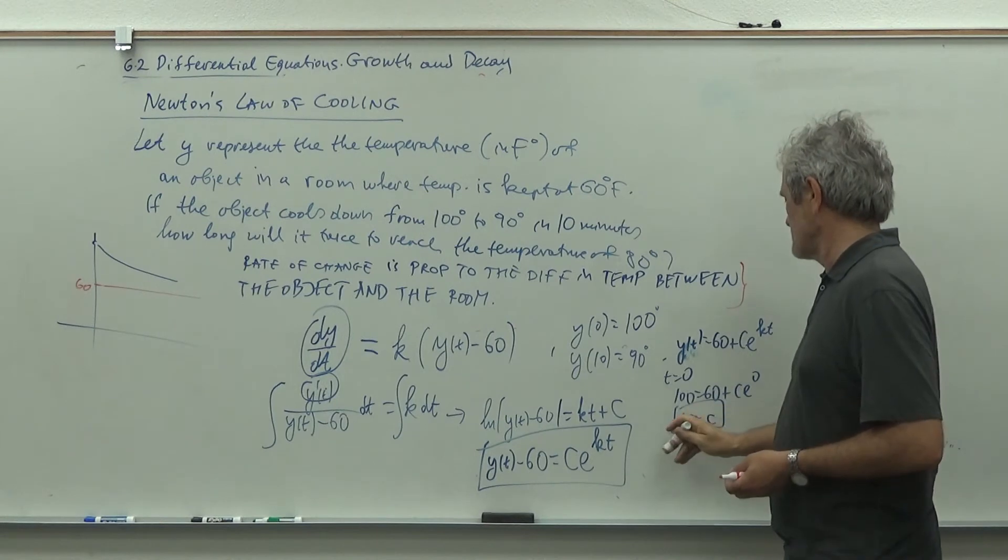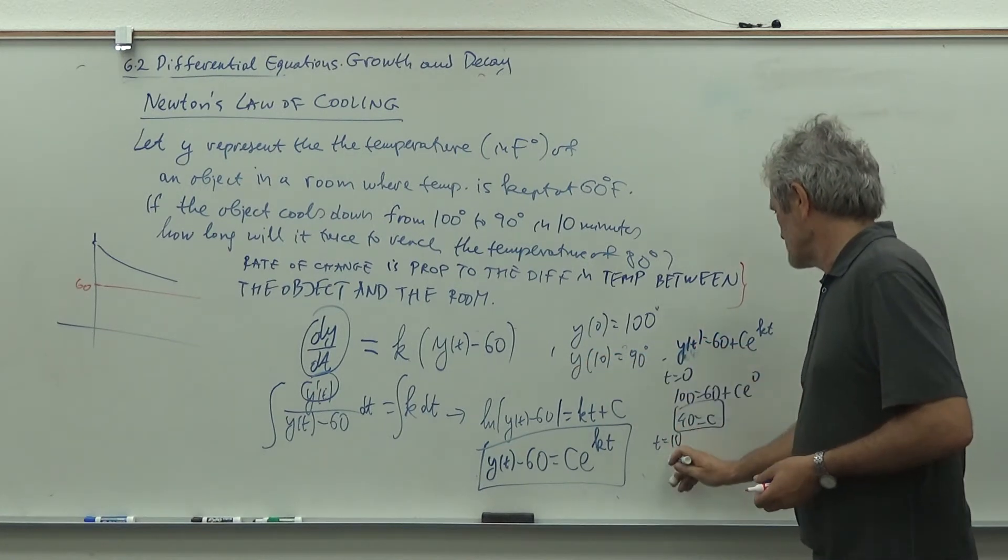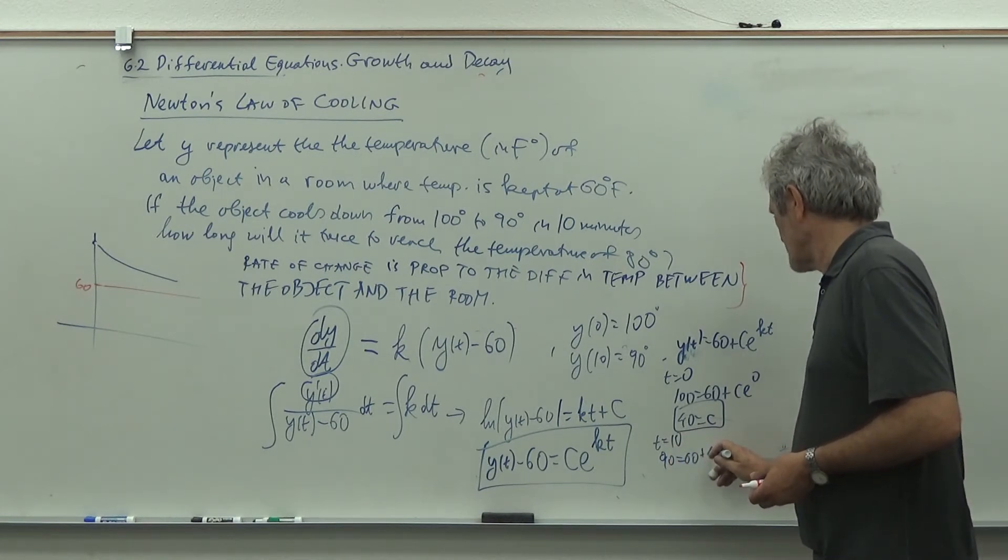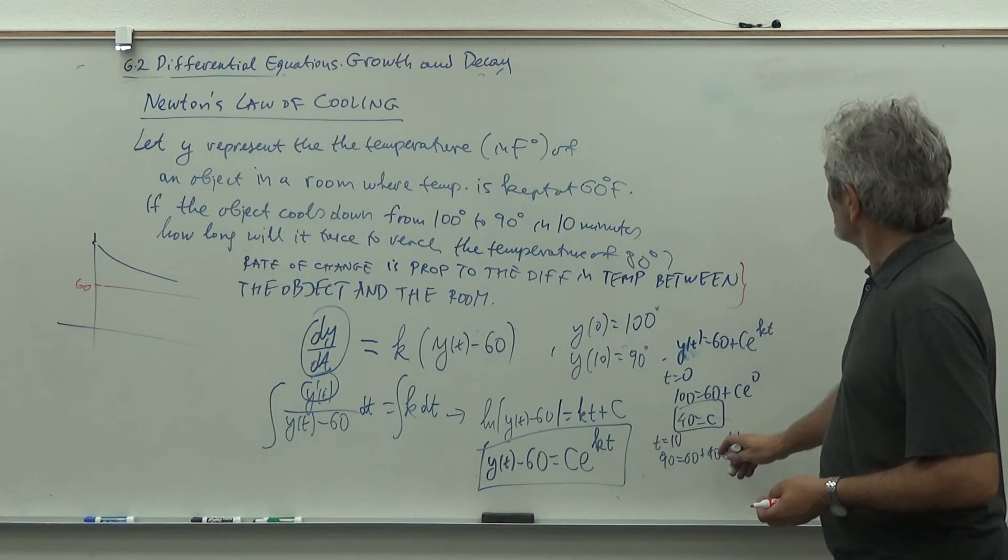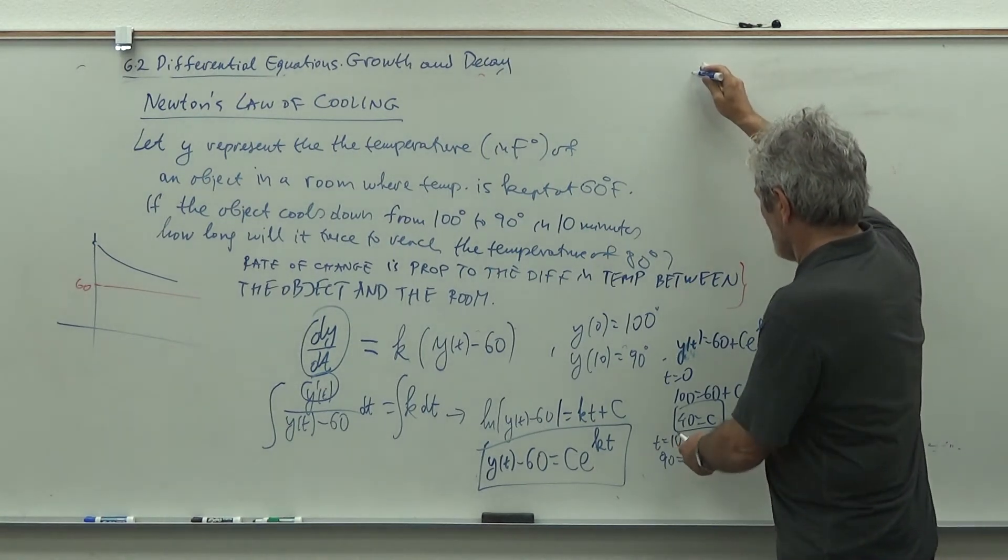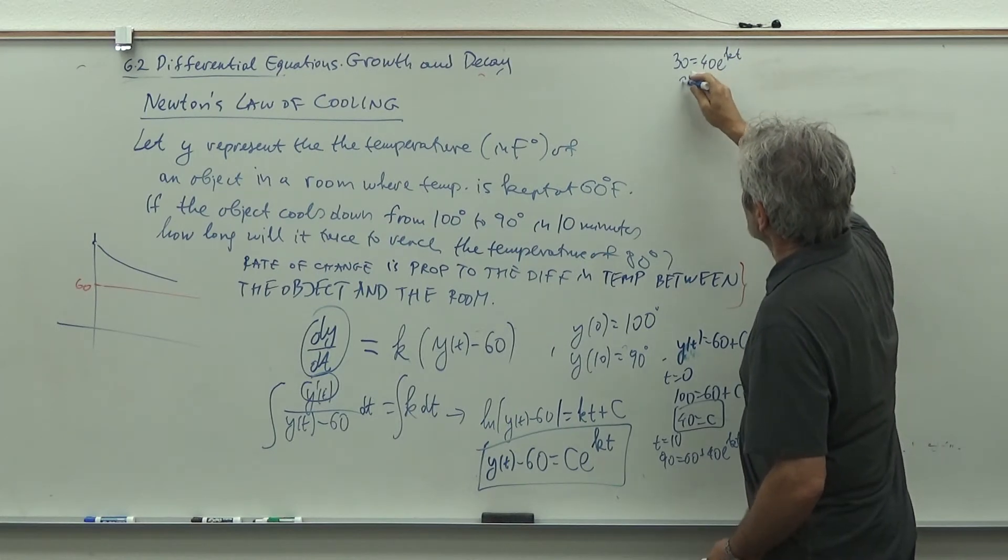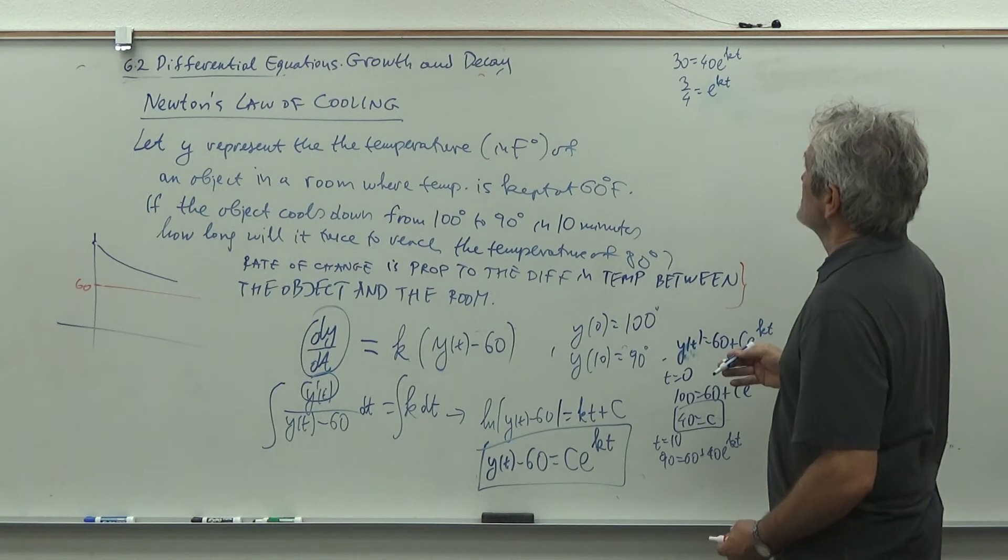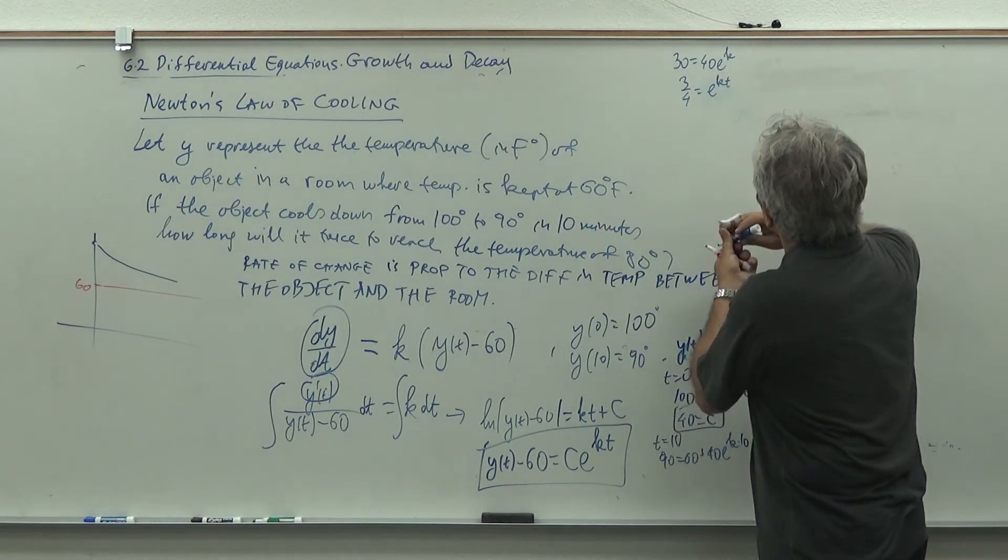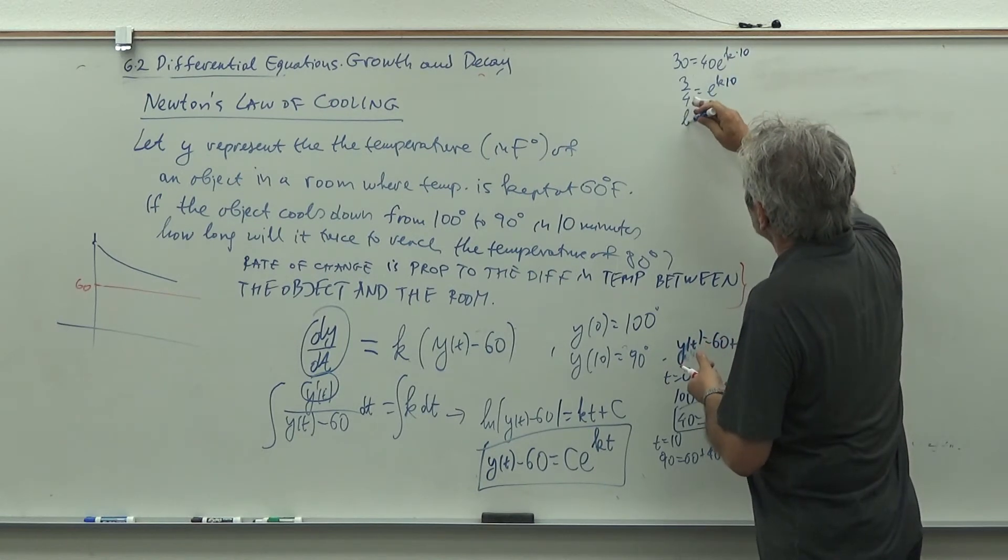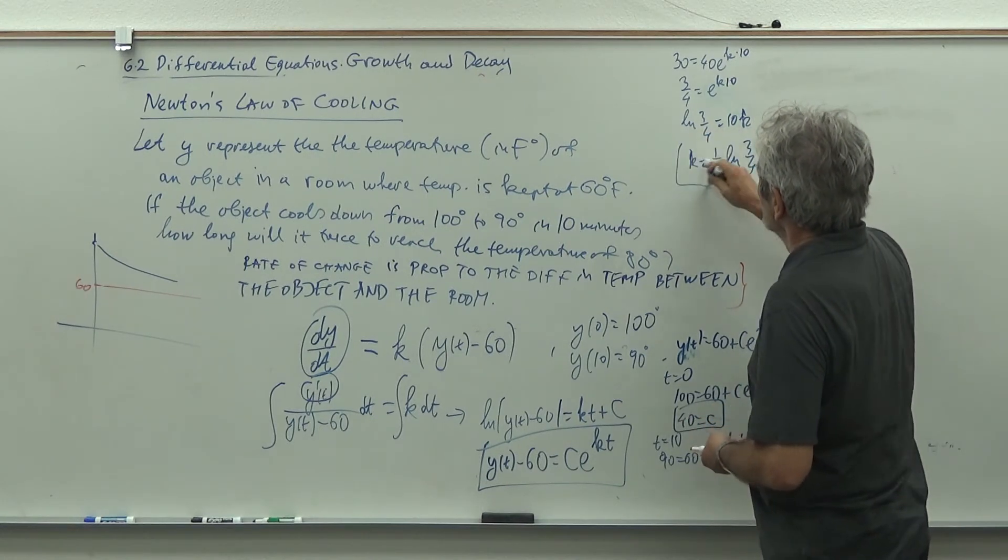When we plug in T equals 10, y of 10 is 90. So 90 equals 60 plus 40 e to the 10k because we solved that C is 40. From here we get 30 equals 40 e to the 10k. When I divide I get 3 quarters equals e to the 10k. So ln of 3 quarters is 10k, so k is one tenth ln of 3 quarters. Here it is.